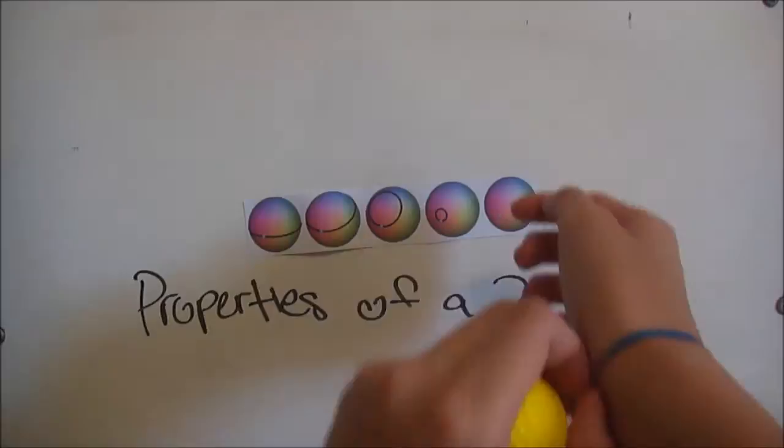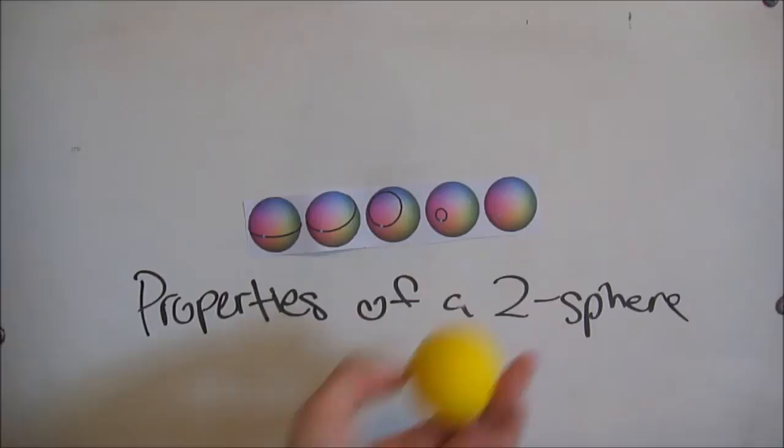Now that we know what these terms mean, we can explain. A 2-sphere has a property where a rubber band encircling it can be pulled tight to one spot. In the process, the rubber band can slip along the surface and does not leave the surface at any time.